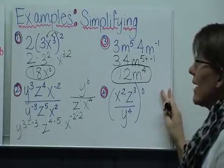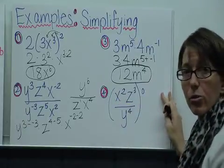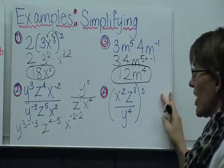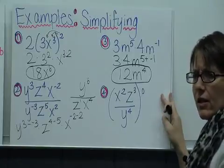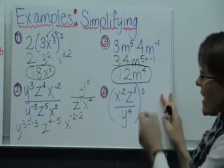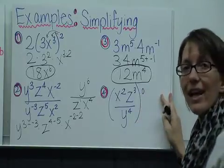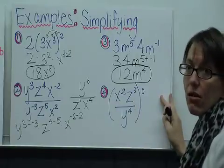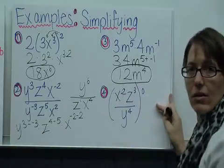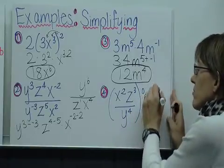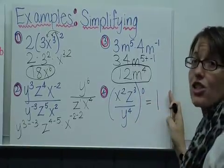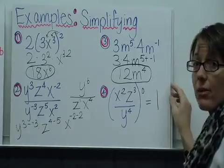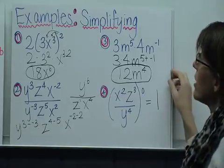In my final example, I have this big expression inside parentheses: x squared times e to the third over y to the fourth. I could think about reducing it, but then I look outside the parentheses and see this is all raised to the zero power. If this whole expression is raised to the zero power, it really doesn't matter what it equals — overall it's just going to be equal to 1. So those are some examples of simplifying using the laws of exponents.